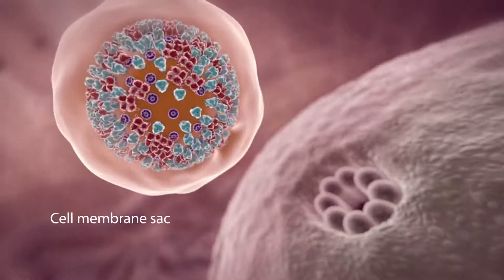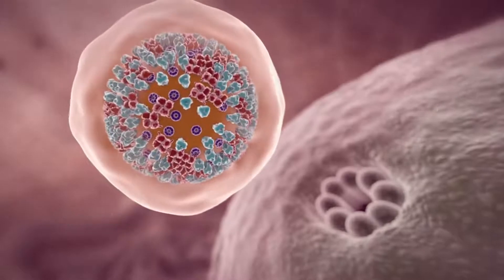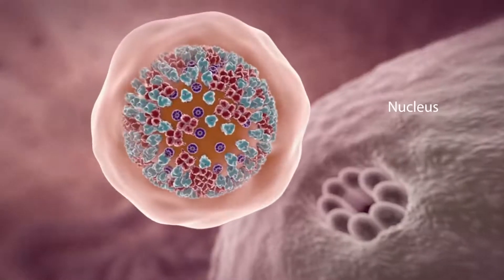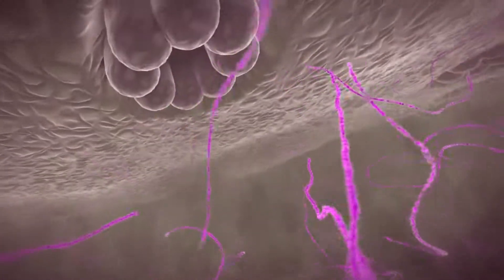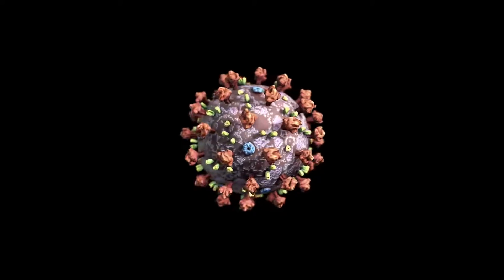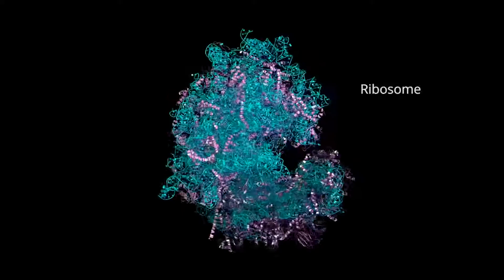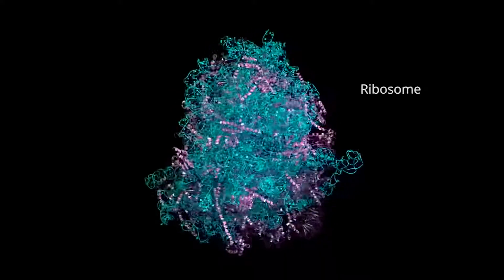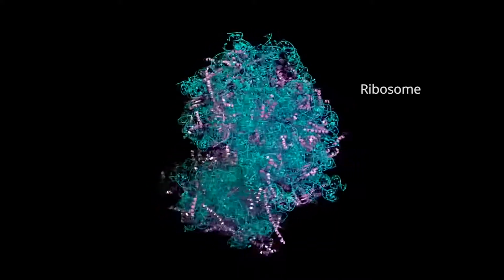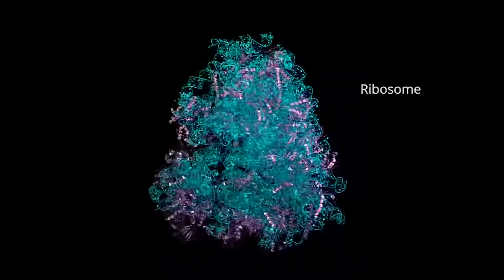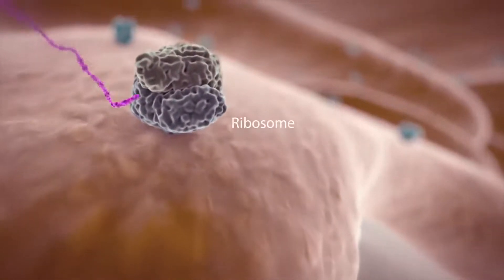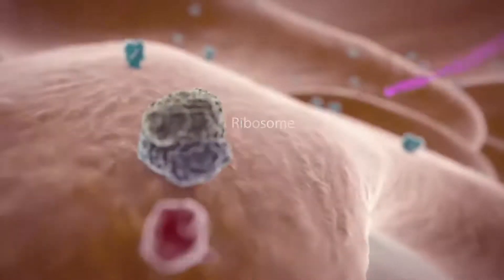A typical flu virus would travel inside a sac made from your cell membrane to your cell's nucleus that houses all its genetic material. The coronavirus, on the other hand, doesn't need to enter the host cell nucleus. It can directly access parts of the host cell called ribosomes. Ribosomes use genetic information from the virus to make viral proteins, such as the spikes on the virus's surface.